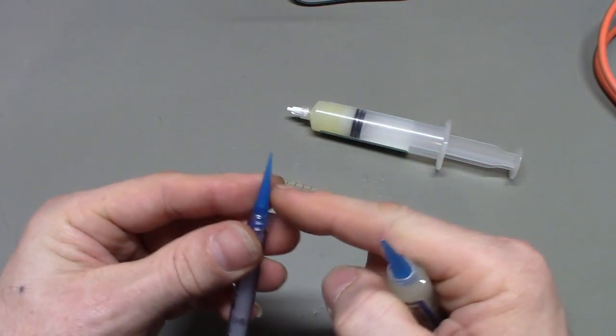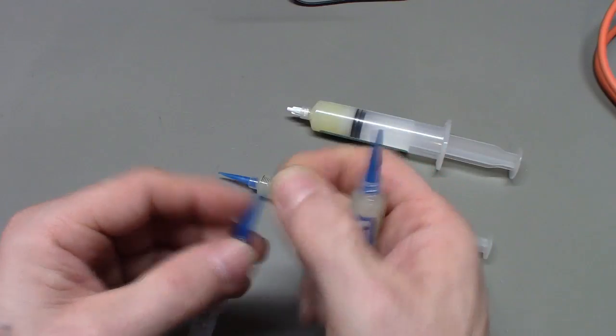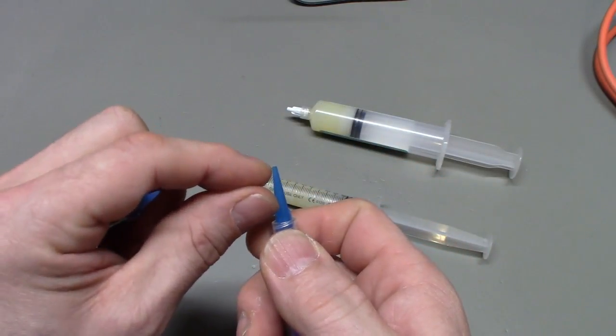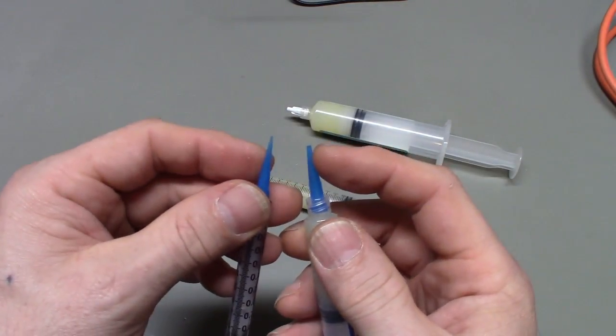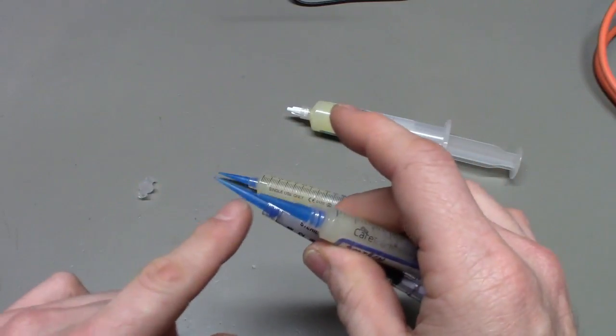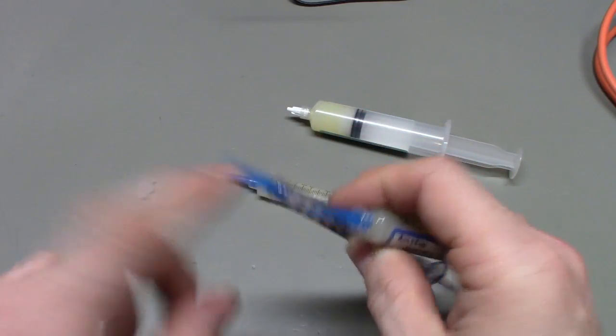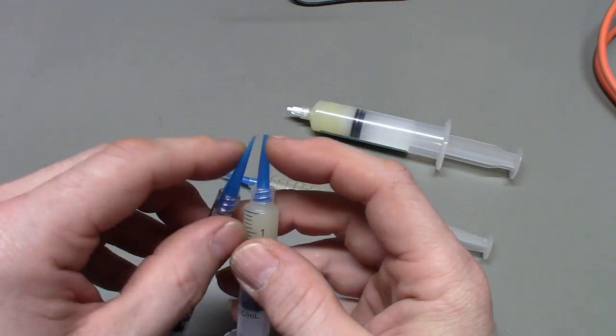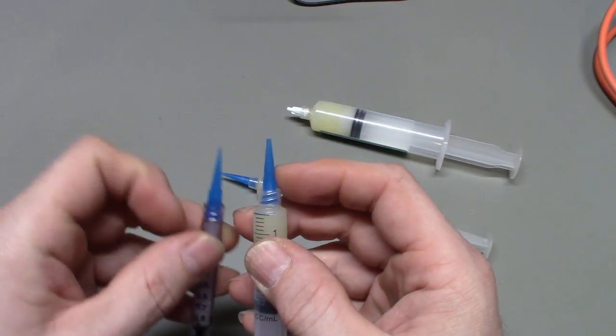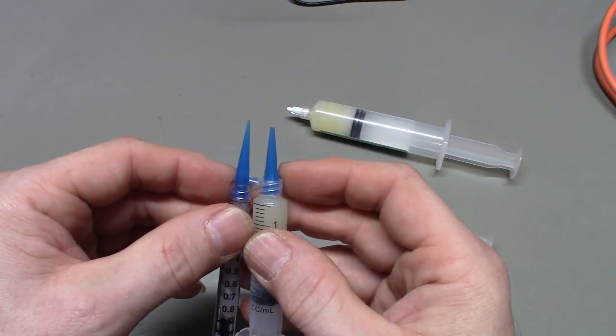So you can buy one size, like a tiny size, and then just trim off just a little bit off the end if you need a bigger hole. That way, you only need to buy one size of these tips, and you can make the hole whatever size you want just by cutting off with a razor blade just a tiny bit off the end of it. You know, cut it to suit your needs at the time.